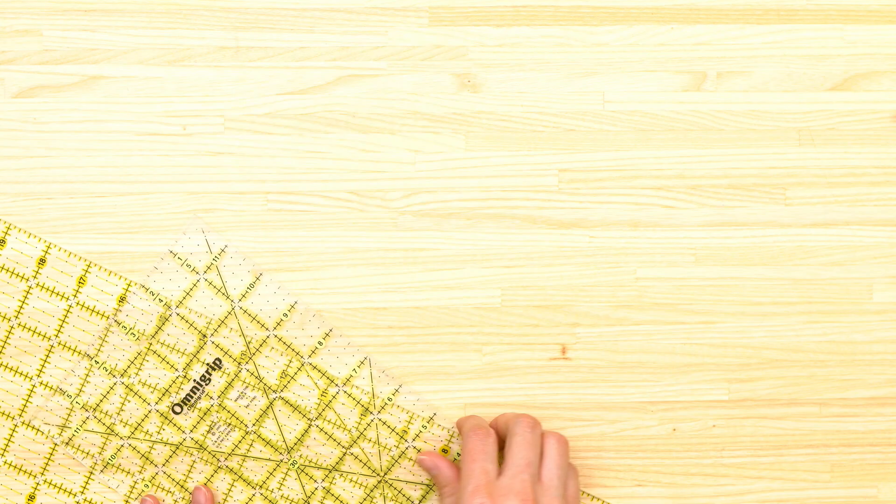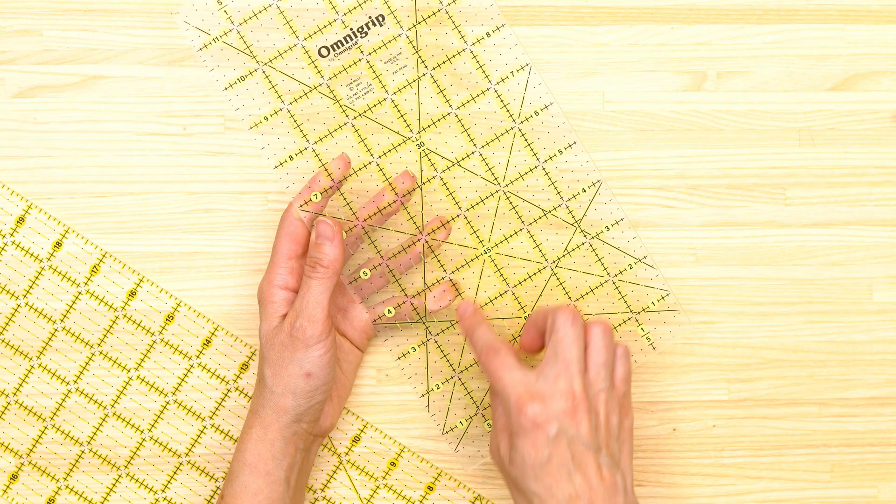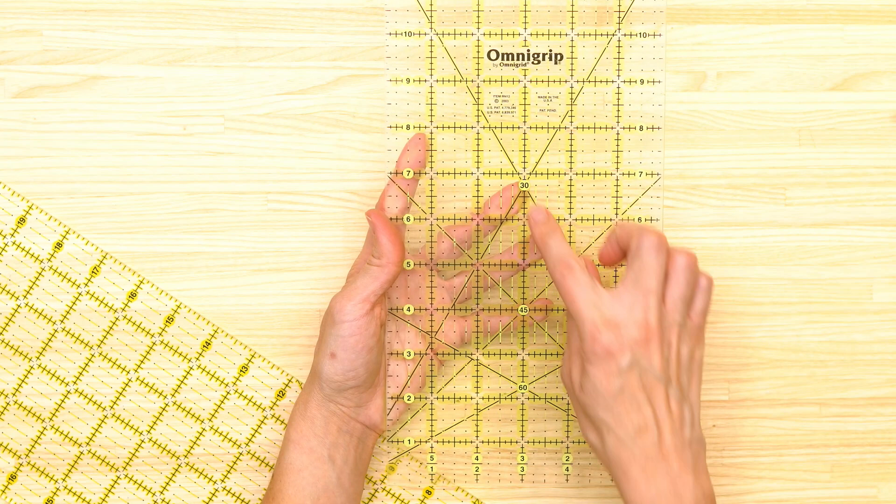Also good for if you're cutting binding and you need to cut it on the bias, there's different angles marked on the ruler such as forty-five degree angles. You can line that up on the corner edge of your fabric. I'm usually using the forty-five degree if I'm using this for bag making.